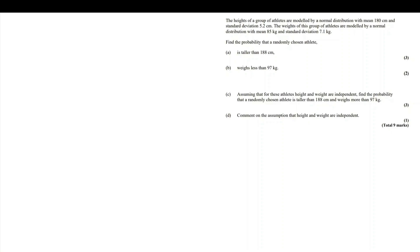The first thing we're asked to do is find the probability that an athlete chosen at random is taller than 188. And then next, we're going to find the probability that a randomly chosen athlete weighs less than 97.